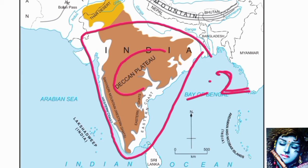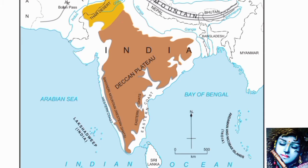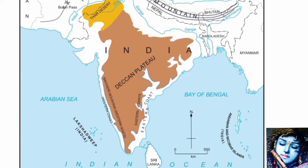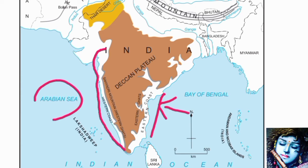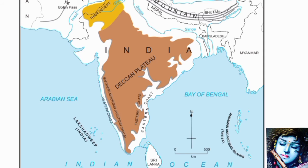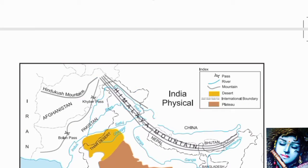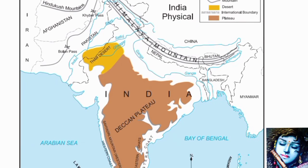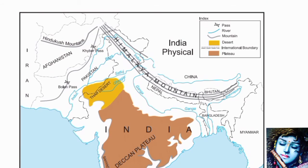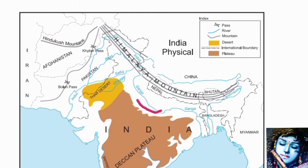The peninsula region has two parts: first, the Deccan Plateau, and second, the coastal area. There is the eastern coast facing the Bay of Bengal, and the western coast facing the Arabian Sea. We need to learn about all these geographical features of India.